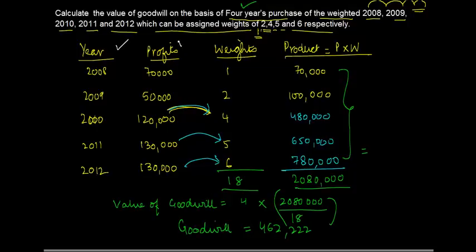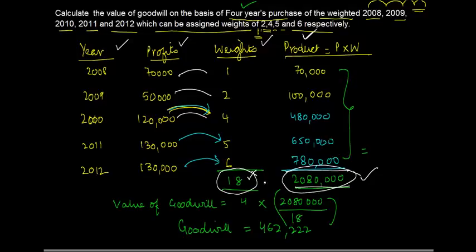You just plug in the years and the profits, you put in the respective weights against this, find out the product of various weights. Then add up the total products, add up the total weights to get this number. The total of the product divided by the total of the weights multiplied by the number of years purchase gives you the value of the goodwill.